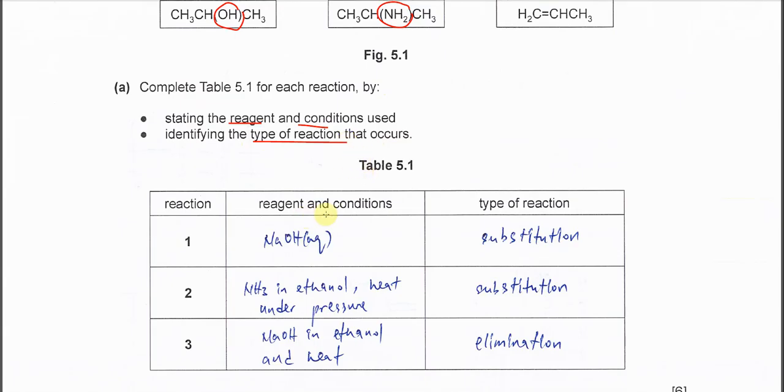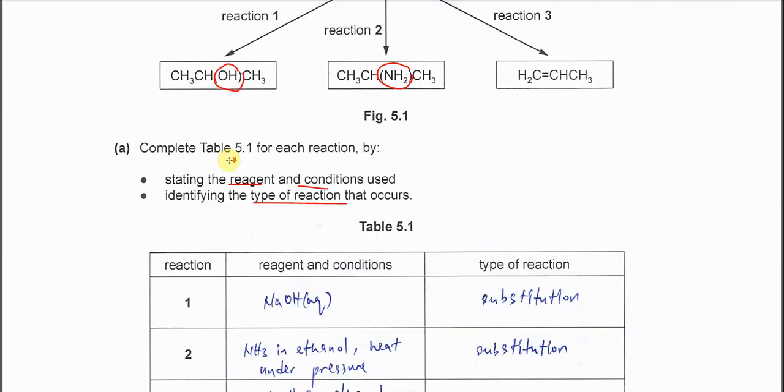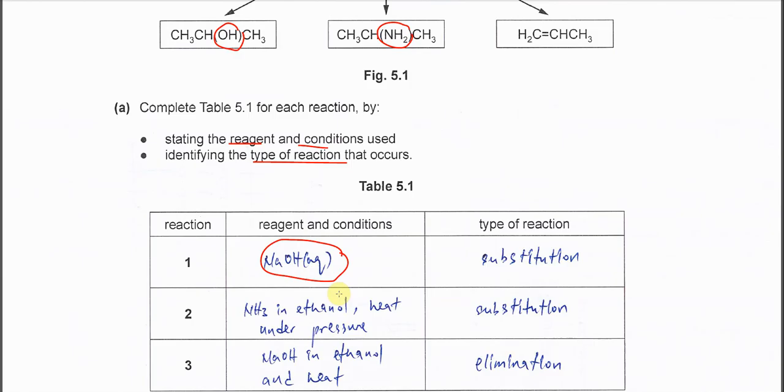For reaction 1, this is the substitution reaction. Alcohol formed. We know that we must use sodium hydroxide in water. So sodium hydroxide aqueous, and the type of reaction is substitution.